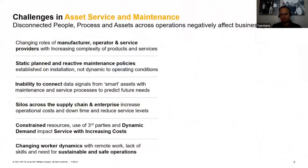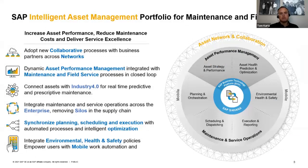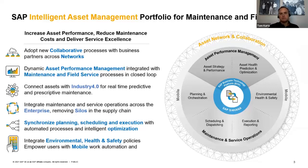Continuing to what this means from a capabilities perspective: we need capabilities for those dynamic changing worker paradigms. You need to collaborate across processes and business partners, across business networks. You need to dynamically integrate your asset performance management systems with your maintenance and field service processes, making it a closed-loop process that feeds back iteratively. You need to connect to your assets through Industry 4.0 technologies.